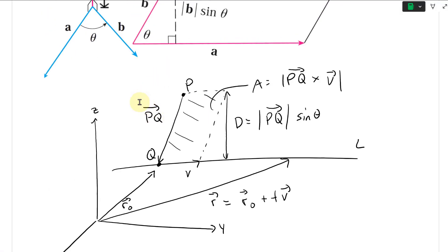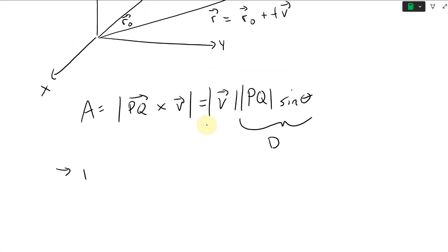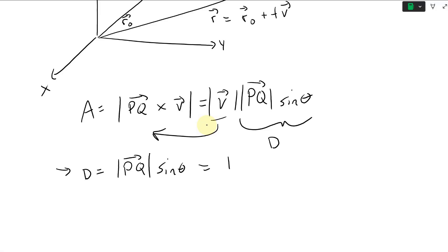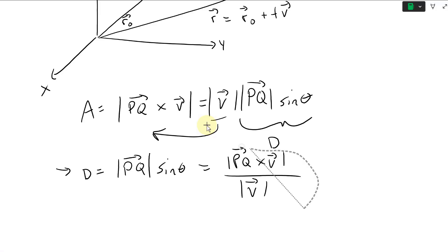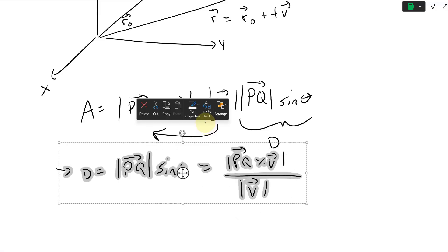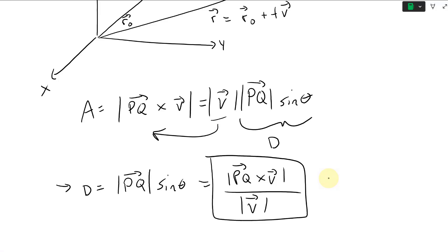Rearranging, the distance D equals |PQ| sin θ. You can view this as the component of PQ projected perpendicular to V. Solving for D, we get: D = |PQ × V| / |V|. That's the distance formula — the magnitude of the cross product of vector PQ with the direction vector V, divided by the magnitude of V.